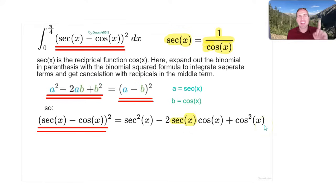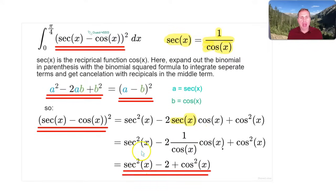And in this case, we're going to let a equal sec(x) and b equal cos(x). So indeed, this is exactly what we get. We FOIL out, that is we square out these terms, we end up with sec²(x) - 2sec(x)cos(x) + cos²(x).